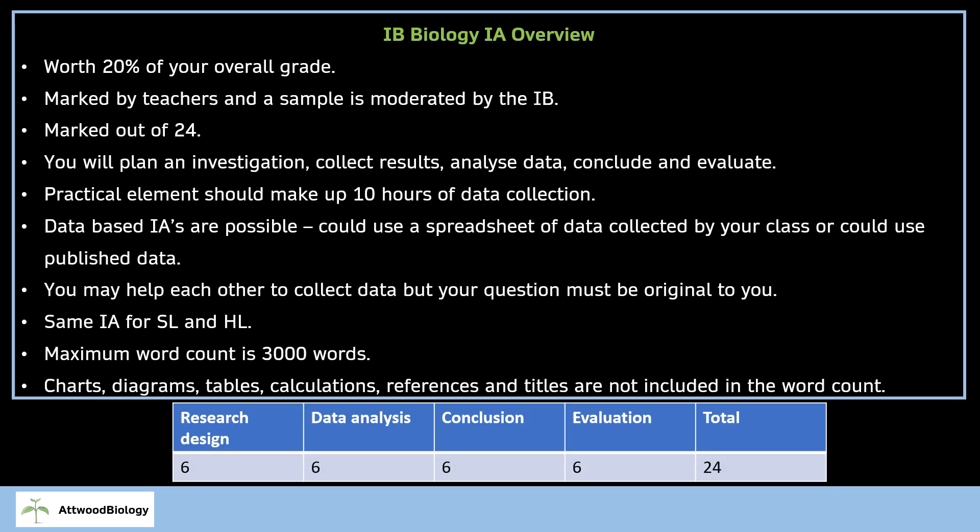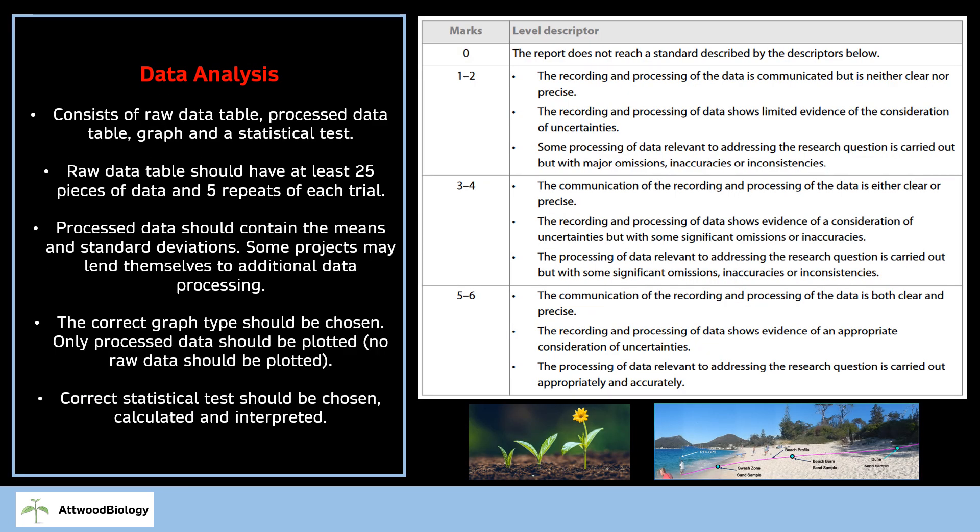Here's the general IA overview if you want to stop and read. And here's the information on the data analysis and marking criteria. Your marker will decide which band you fall into and whether you're in the upper or lower limits of that band. It's useful to refer back to this when writing your IA to ensure you're hitting all level descriptors to get five or six out of six.